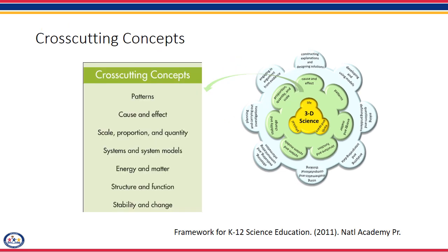The second dimension is the cross-cutting concepts, and they have application across all domains of science. There are seven cross-cutting concepts, and the framework emphasizes that these concepts need to be made explicit for students because they provide an organization for interrelated knowledge from various science fields into a coherent and scientifically based view of the world. The cross-cutting concepts have been around for a long time, but now they appear in the standards document along with the learning progression. So we need to change them from being a tool for teachers to a tool for students. If students are using the cross-cutting concepts in their K-12 schooling, they will be able to internalize those tools and apply them to other concepts and future use.